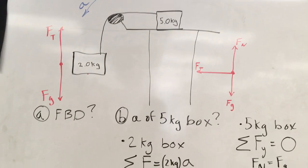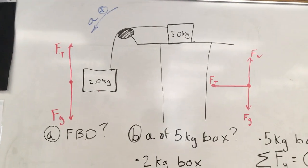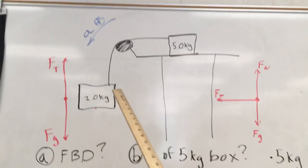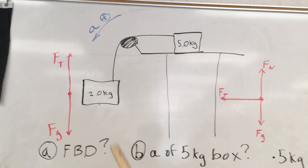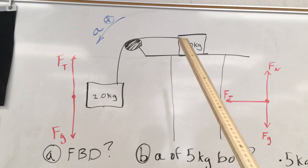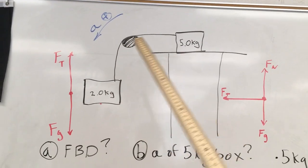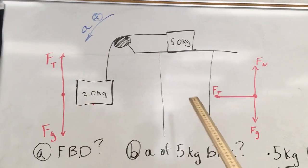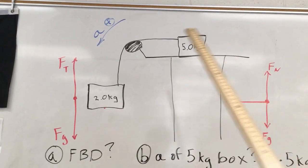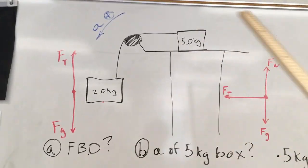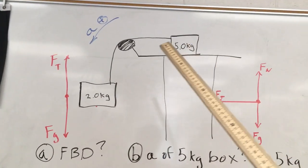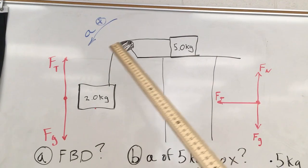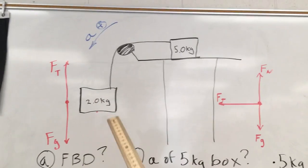We have two blocks: the five kilogram block is on a table, meanwhile the two kilogram block is falling down towards the floor. The key here is that they are connected by a single rope, and the assumption we have to make is that the rope has the same tension throughout. The whole system will be accelerating in a counterclockwise direction — the five kilogram block moving to the left, the two kilogram block moving down.